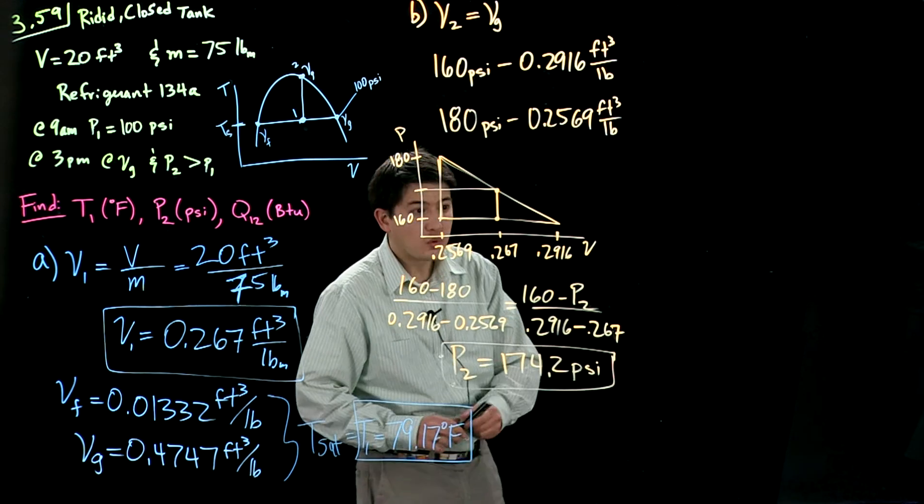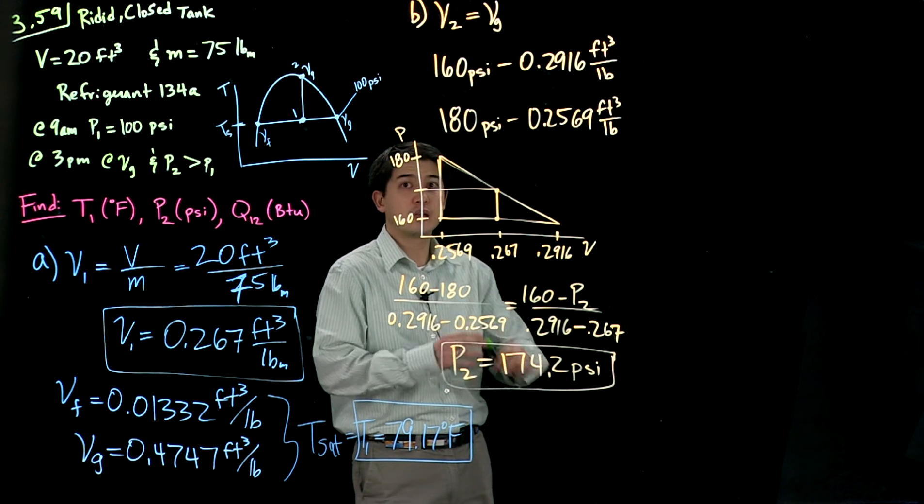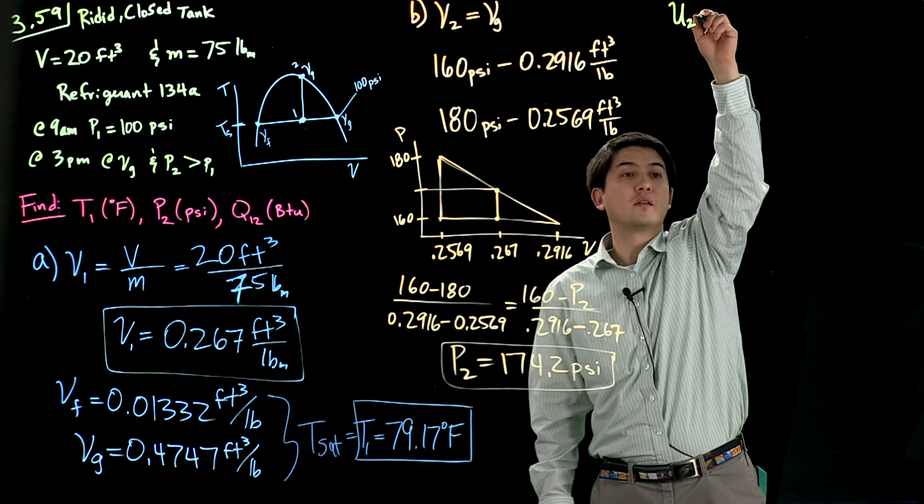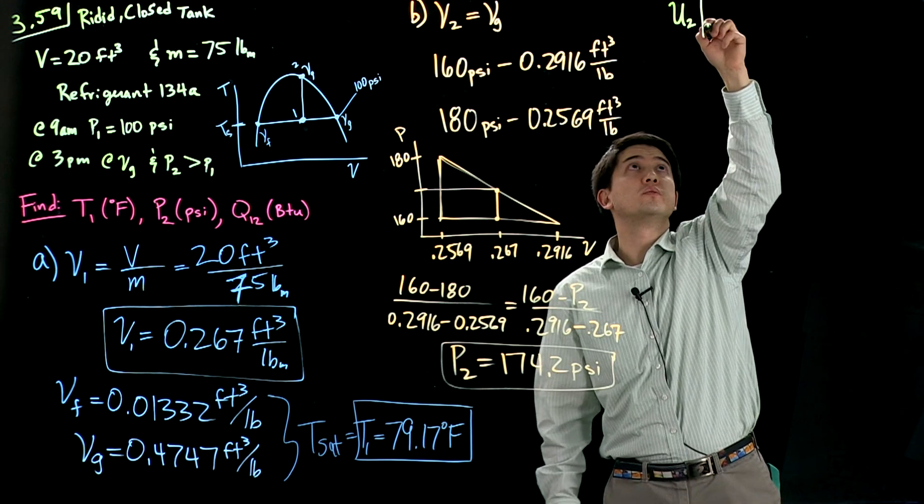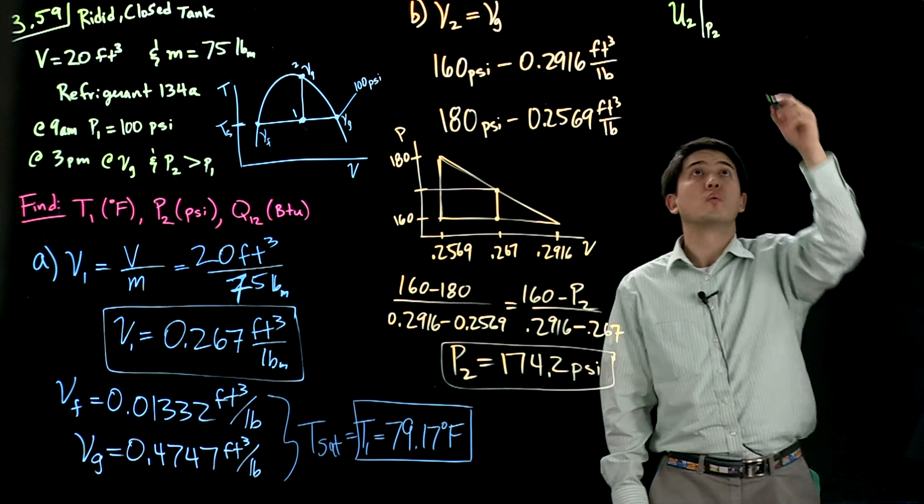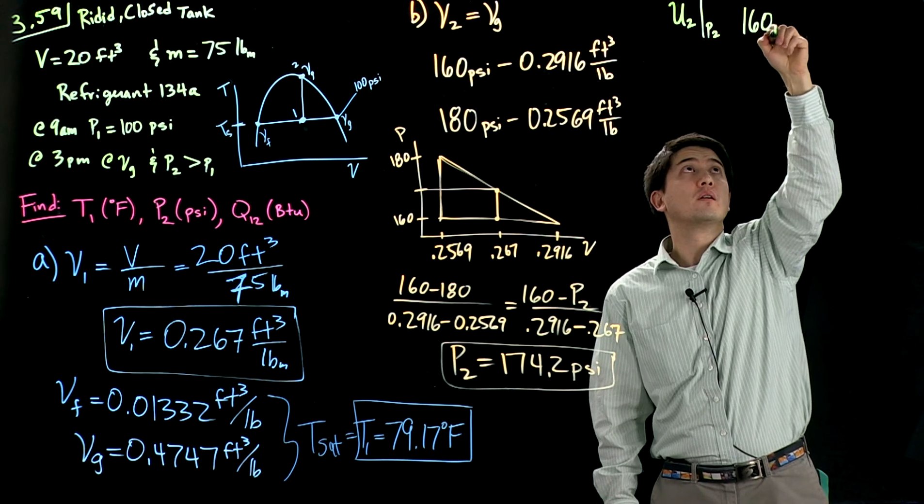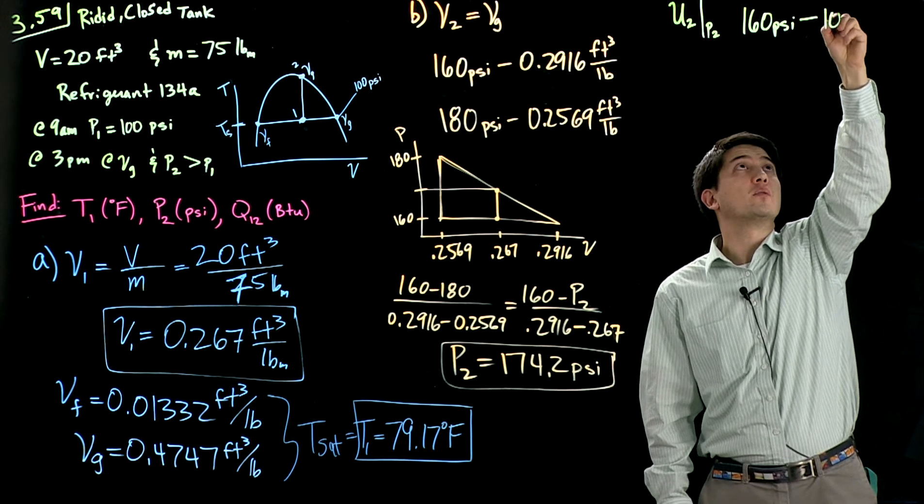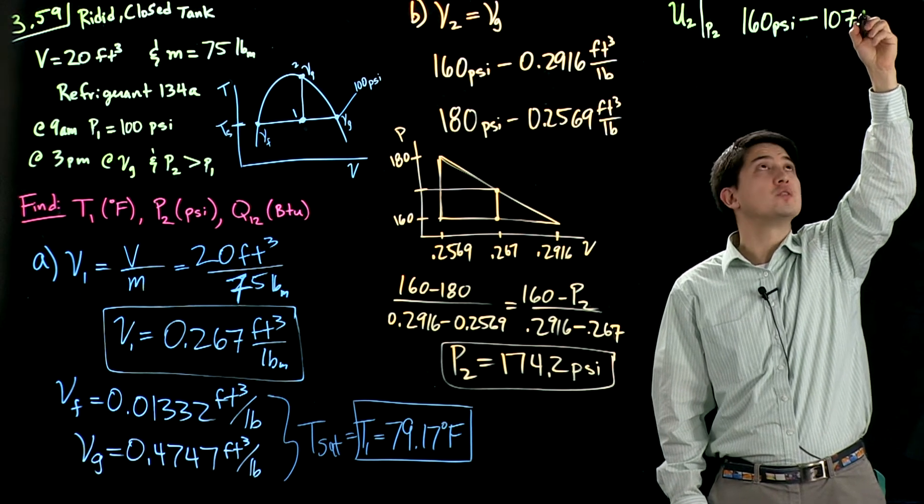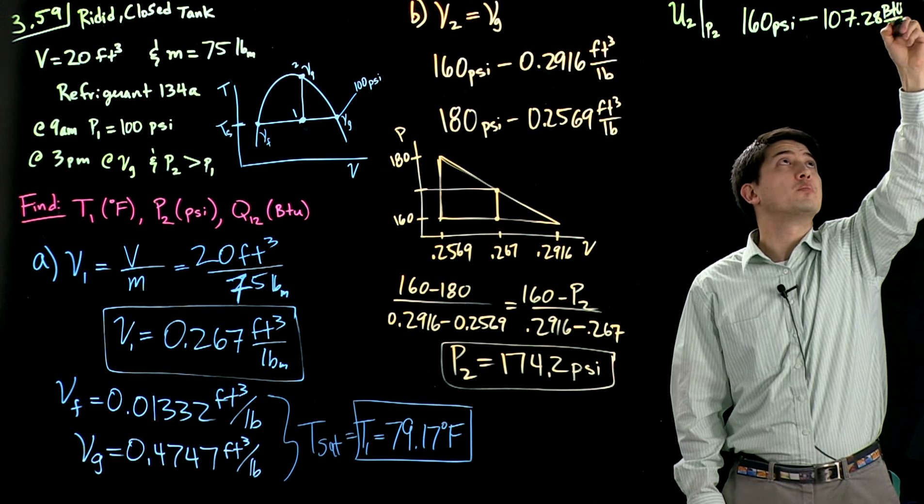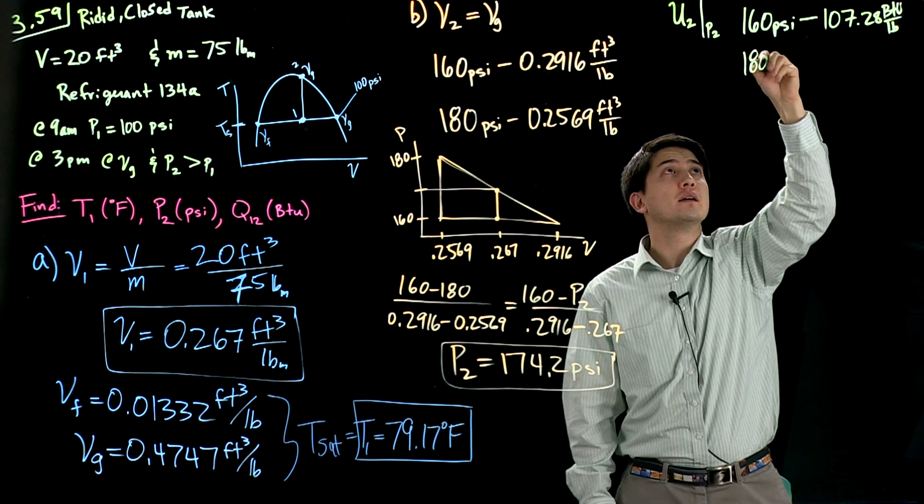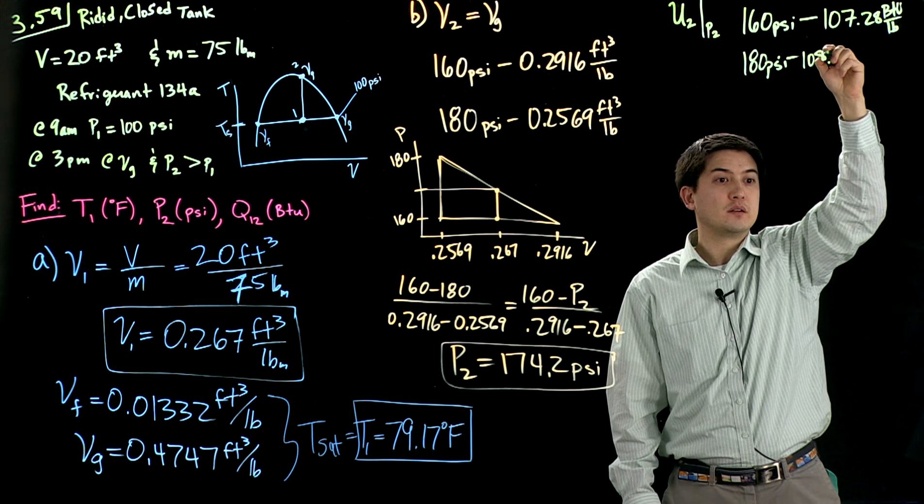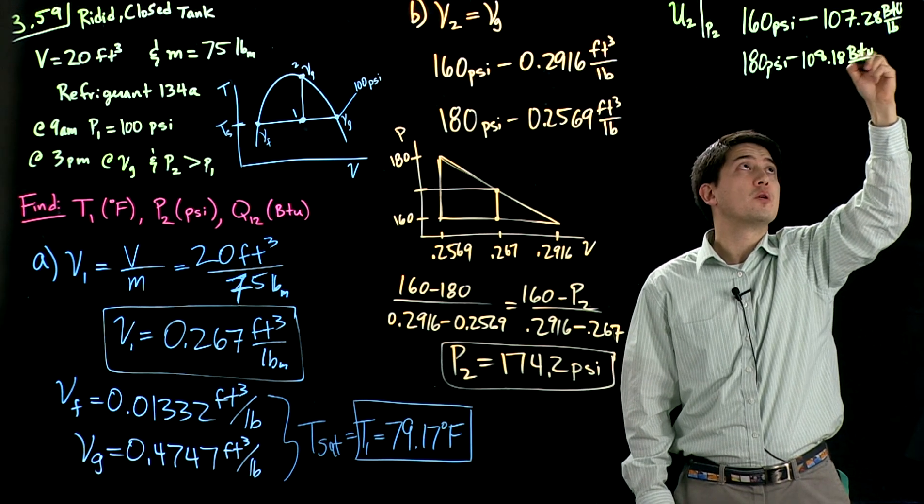Next, we'll want to find the internal energy at state 2. At pressure 2. Again, we can look up from the tables at 160 psi. You can find we're at 107.28 BTU per pound. At 180 psi, we would be at 108.18 BTU per pound.